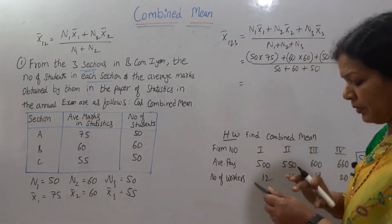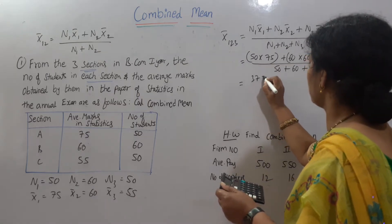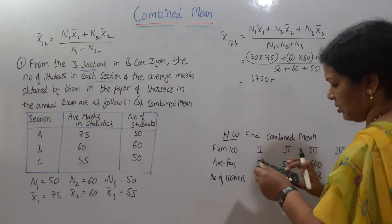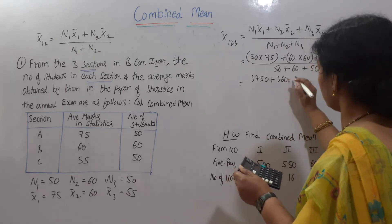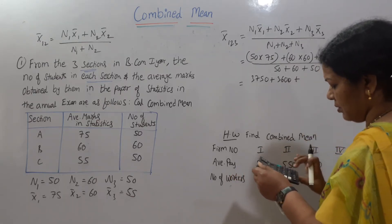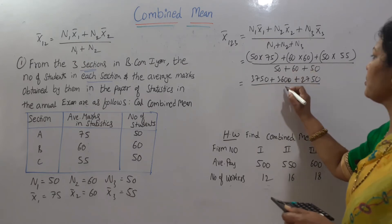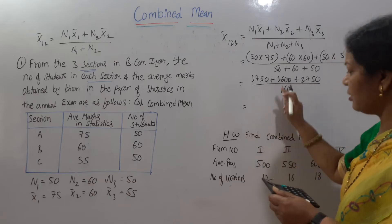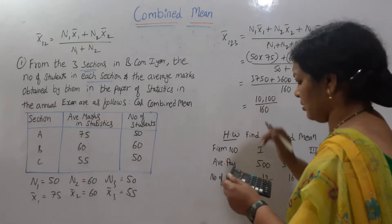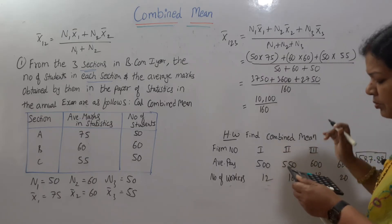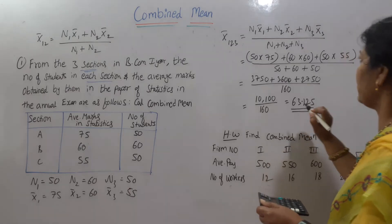Just simply calculate it. Everything: 50 into 75 comes to 3,750 plus 60 into 60 comes to 3,600 plus 50 into 55, 2,750, divided by 50, 100, 100 plus 60, 160. Now if you total everything, it comes to 10,100 divided by 160, comes to 63.125. 63.125 is the combined mean.